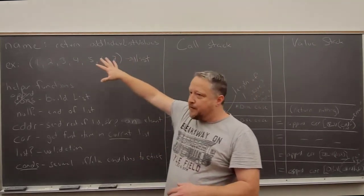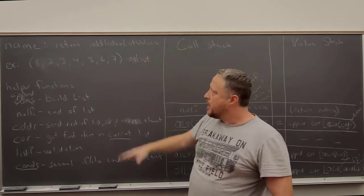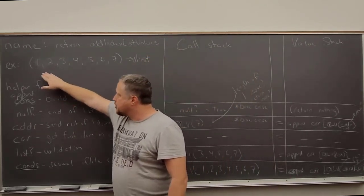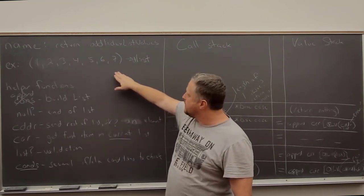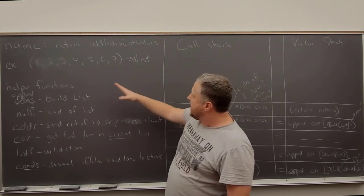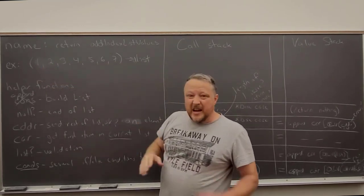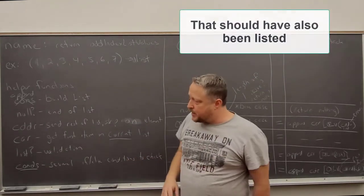First is the name of my function. This one's going to be return odd index list values. And notice I give the name. I also give an example of what I want and then what the name of that list is going to be. And basically I want to make sure that I get every odd index, not the value, but the index for each one of them.